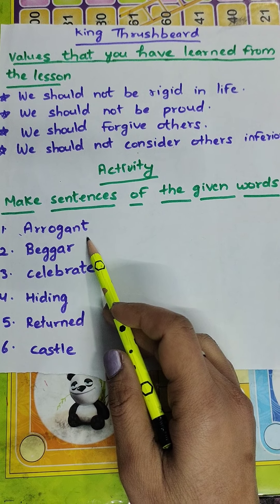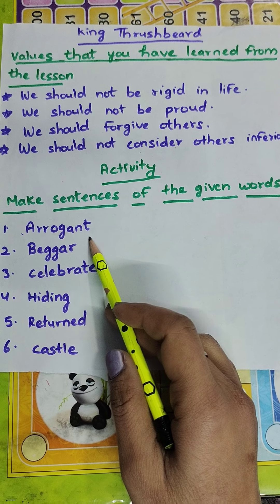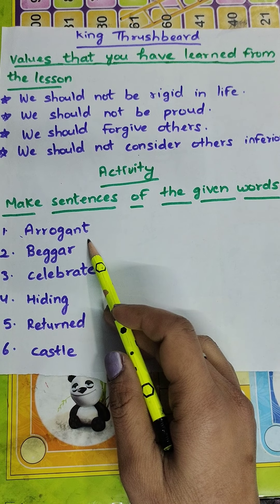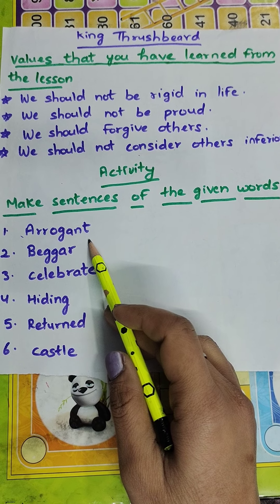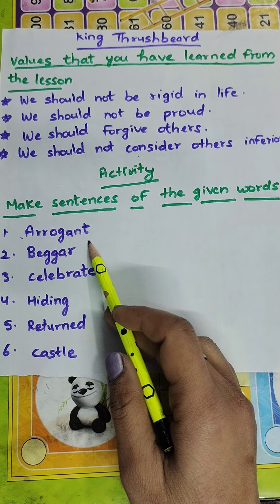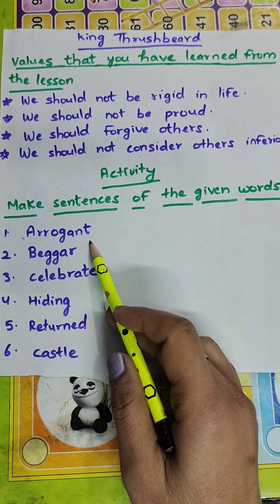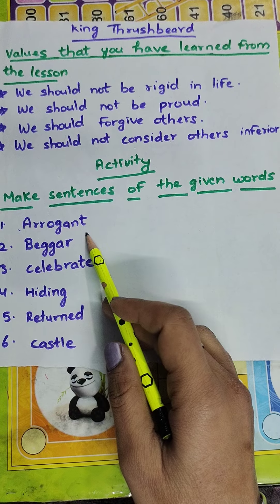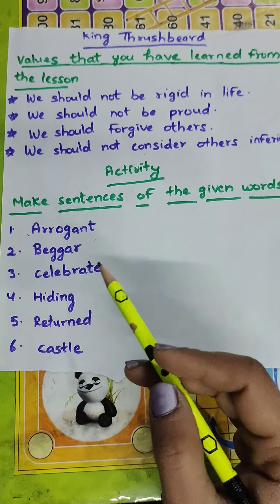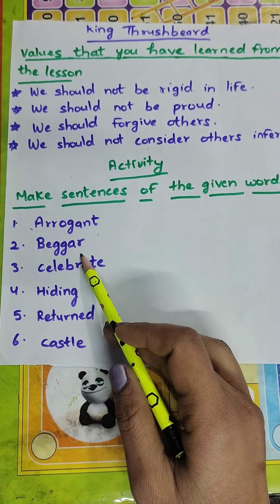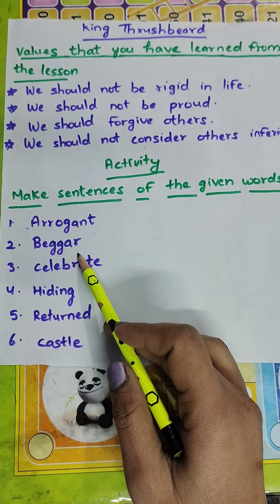Usi apne sundarta ka bohot ghamand hai — She is arrogant because of her beauty. Why are you so arrogant? Tum ghamandi kyun ho? He was so arrogant — wo bohot ghamandi tha. Now next is beggar.